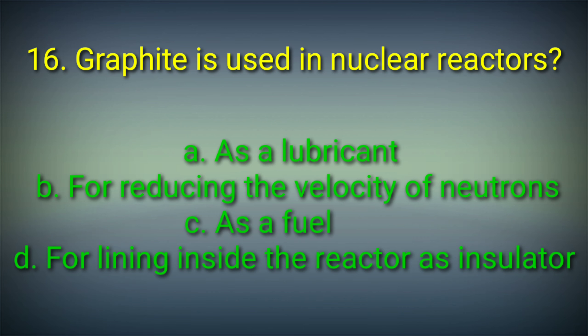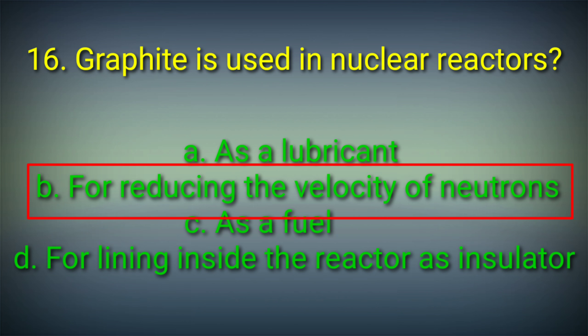16th question: Graphite is used in nuclear reactors — Options: A. As a lubricant, B. For reducing the velocity of neutrons, C. As a fuel, D. For lining inside the reactor as insulator. Answer: Option B. Graphite is used in nuclear reactors for reducing the velocity of neutrons.